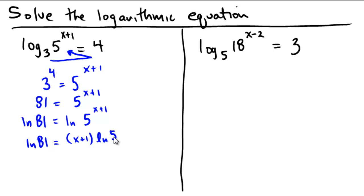And now if I wish to isolate x, we'll divide both sides by the logarithm of 5. So ln of 81 divided by ln of 5 is equal to x plus 1.